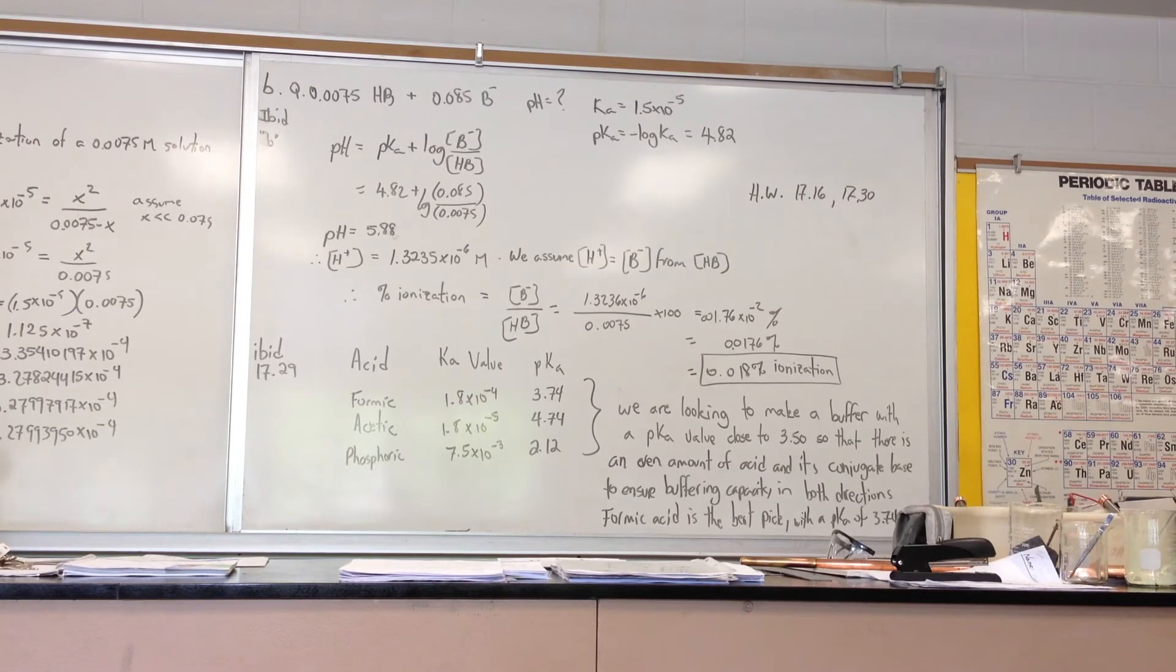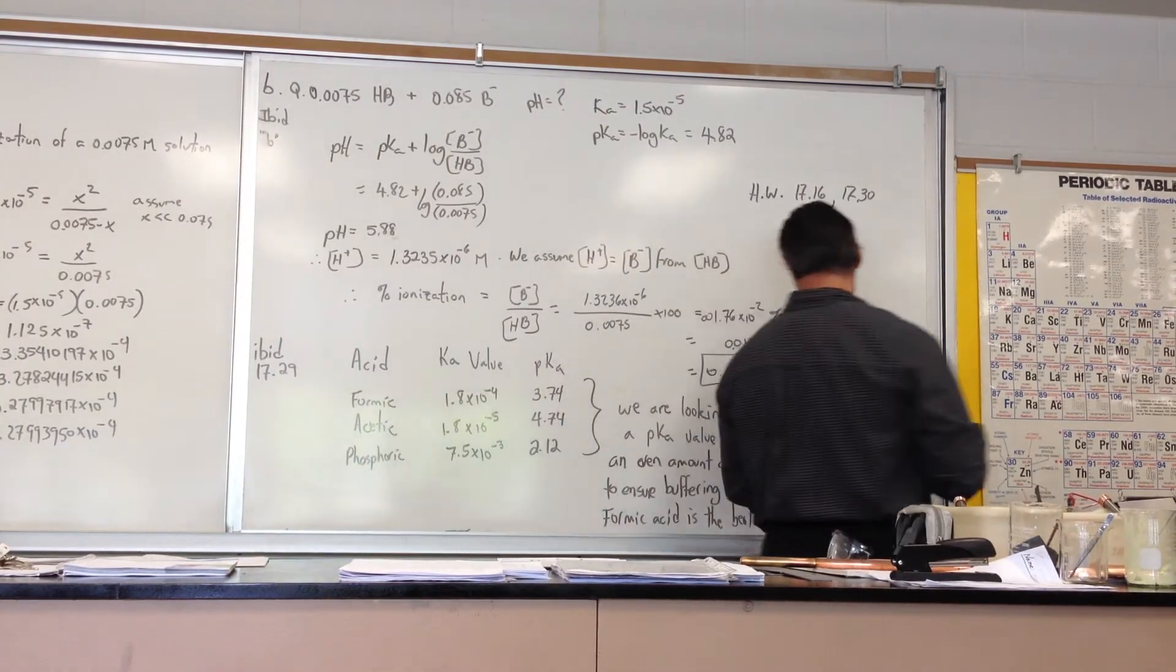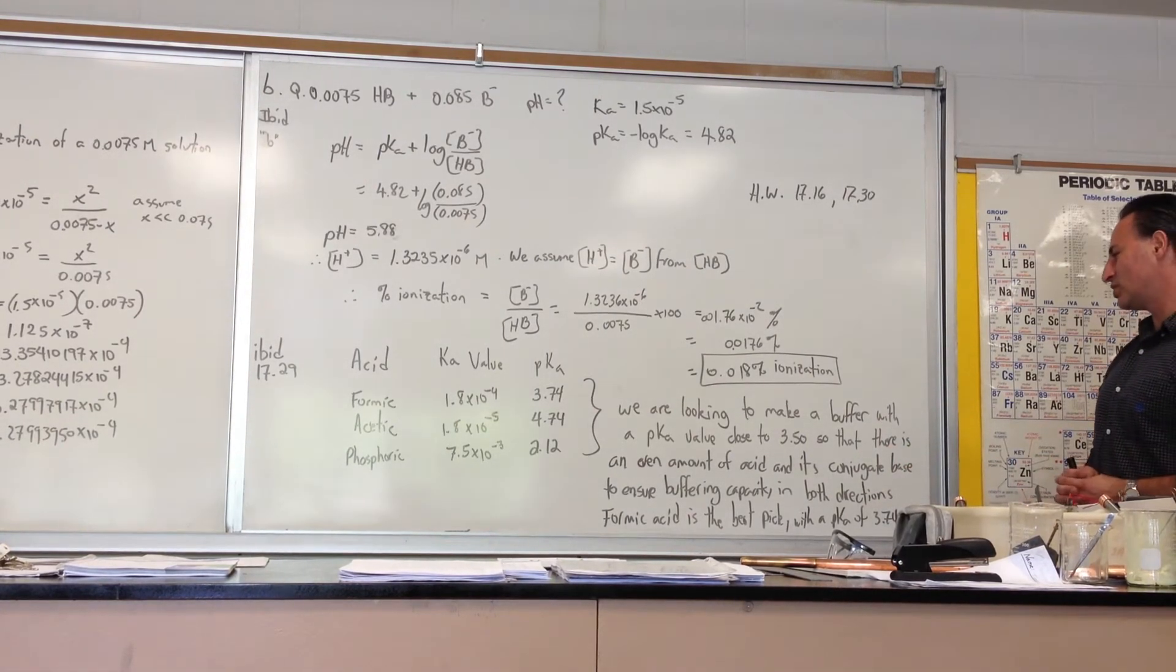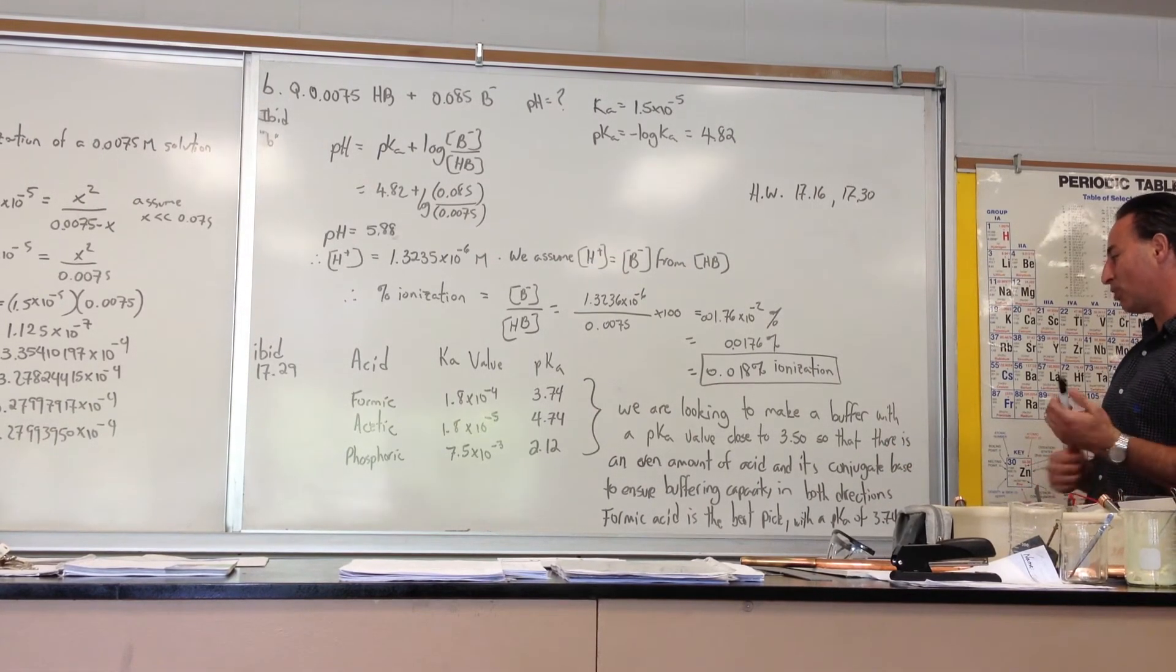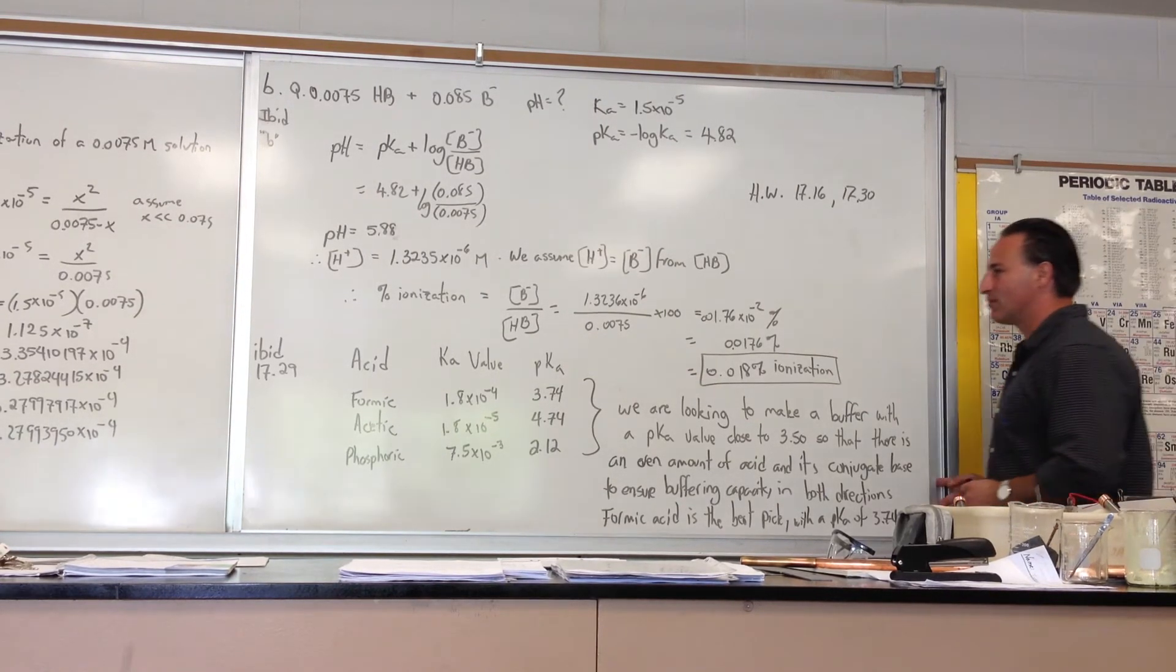In an ideal buffer, it can buffer changes of pH in both directions, whether you add acid or base. So I write that we're looking to make a buffer with a pKa value close to 3.5 so that there is an even amount of acid and its conjugate base to ensure buffering capacity in both directions. Formic acid is the best pick with a pKa of 3.74.